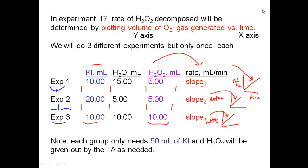Each group only needs about 50 mL of KI to do this experiment. Your hydrogen peroxide will be given out by the TA as needed — raise your hand and they'll bring it to you. Those are the only two reactants involved in this reaction.